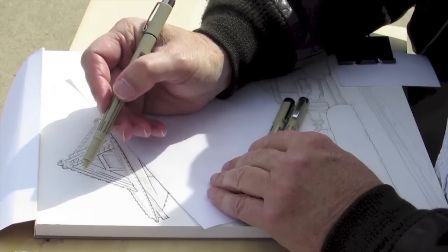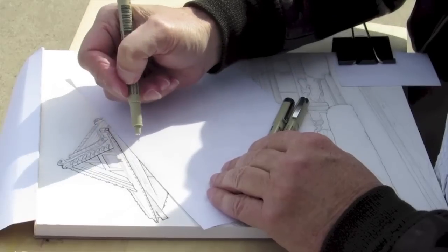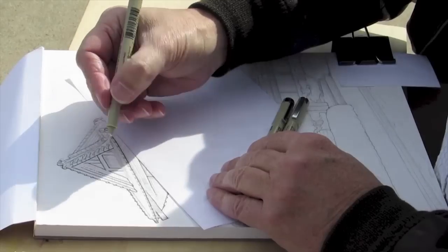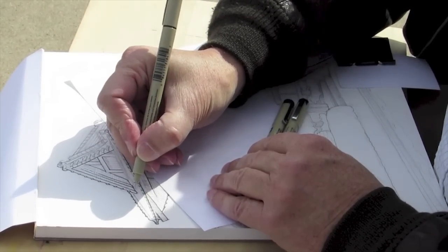If we have highlights, we want to reserve the white of the paper for those areas. If you see an area, take a look at your subject, identify where your highlights are, and reserve the white of the paper for that.